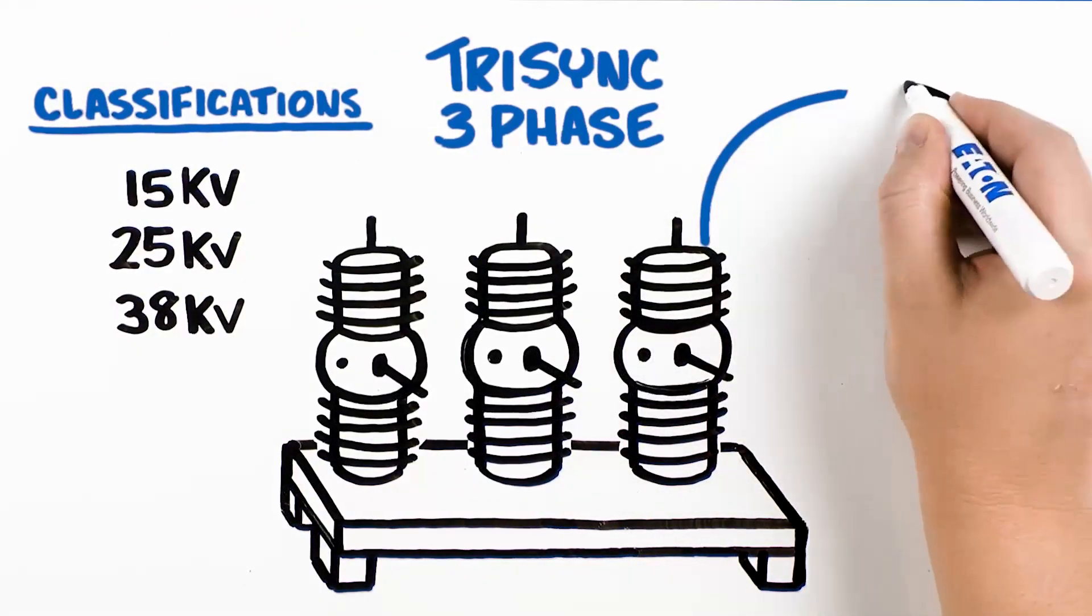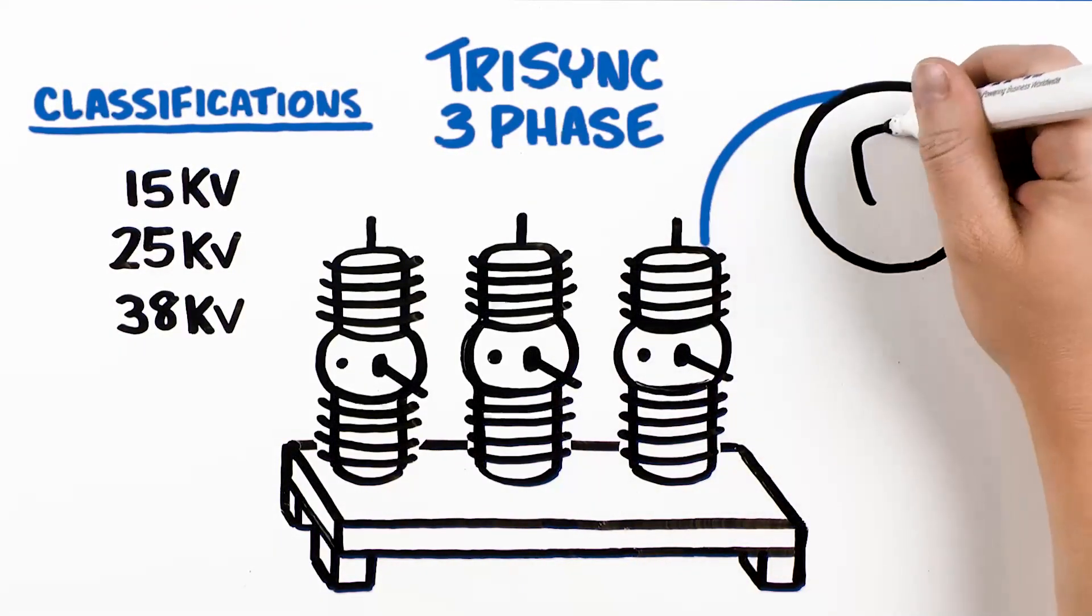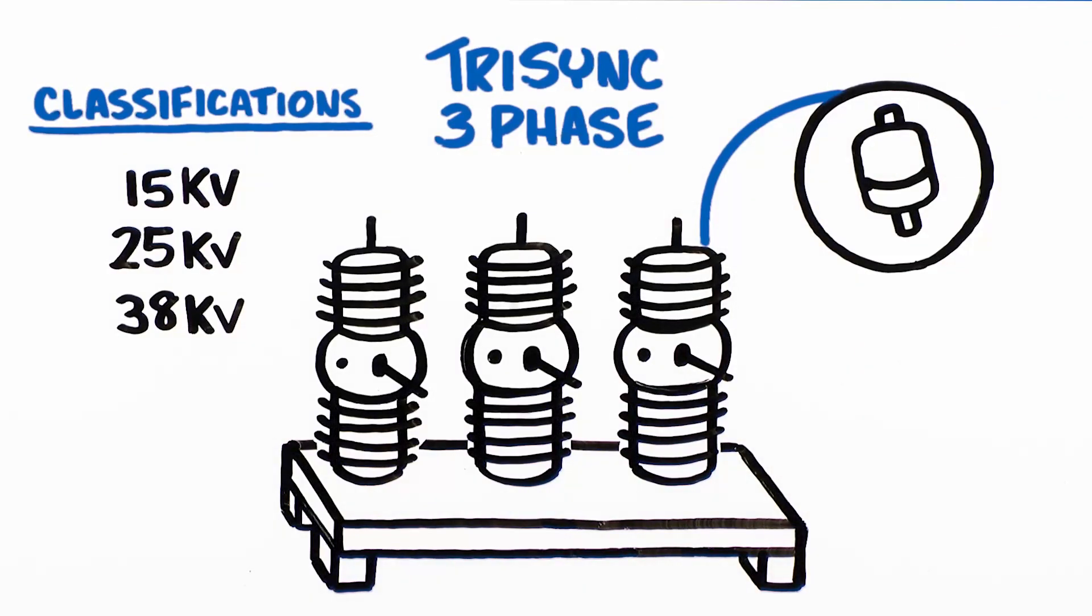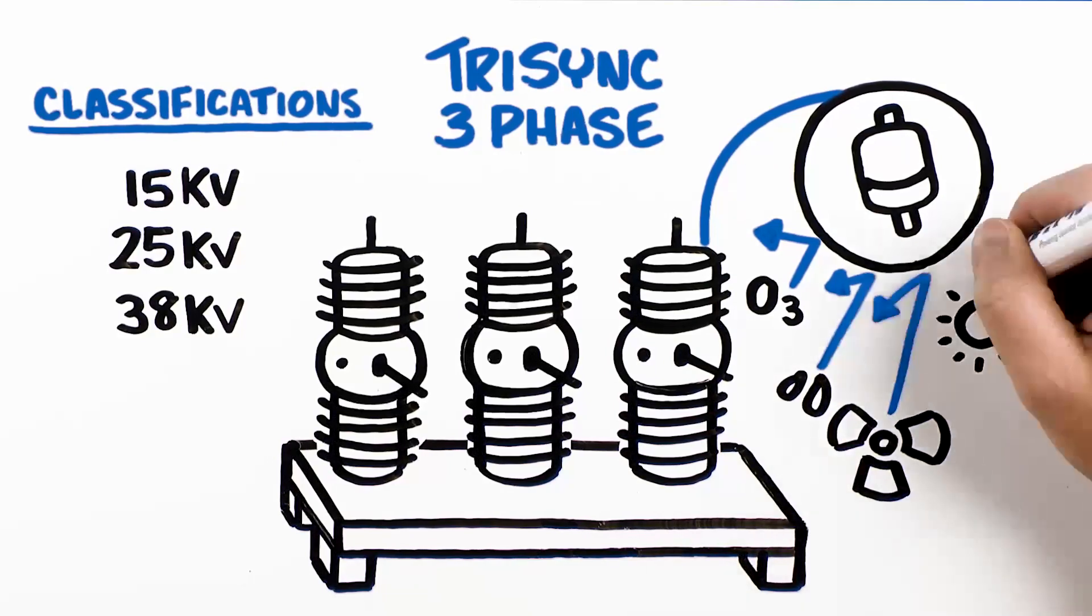Each phase features a single vacuum interrupter with a durable epoxy insulation, providing high resistance to ozone, moisture, contamination, and ultraviolet light.